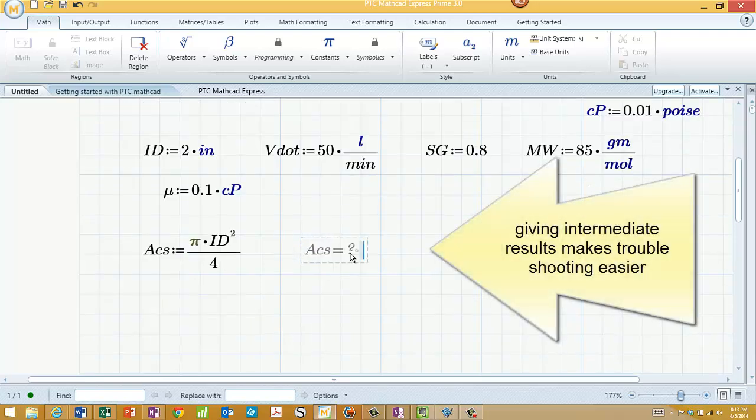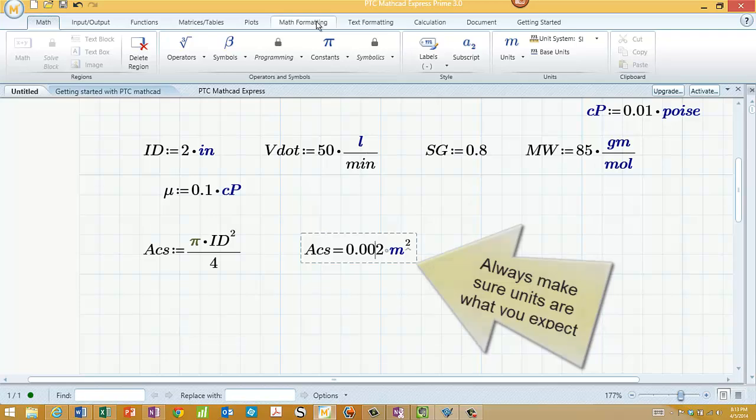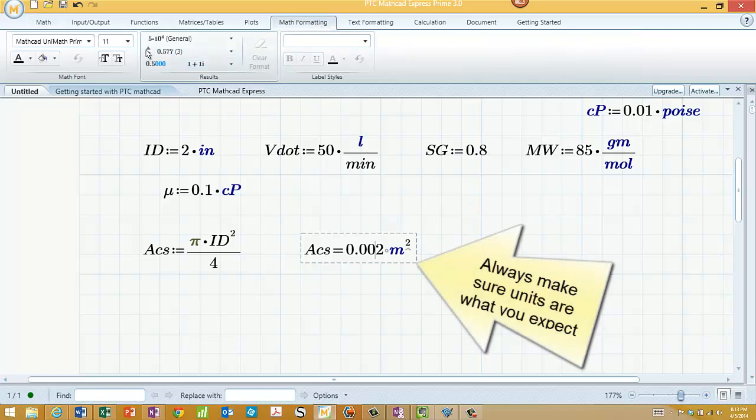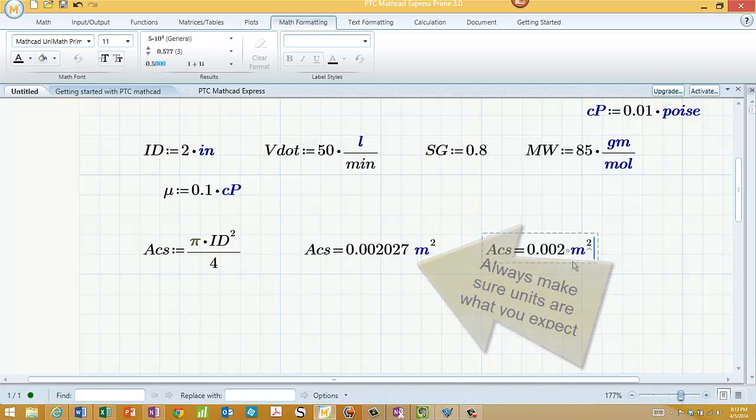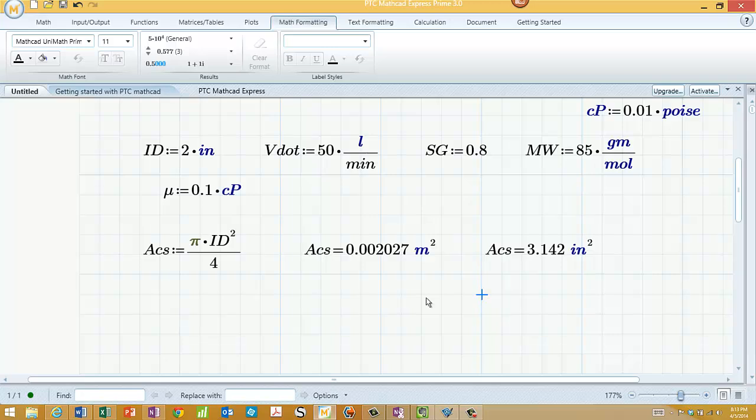ACS. And just hit the normal equal sign. When you hit the equal sign, that's telling MathCAD you want a number. Now, one thing it didn't do is give me enough significant figures. So I'm going to go up here in MathFormatting and just increase that a little bit. It defaults to SI units, unless you change the default. But if I want this, say, in inches squared, it'll compute that too.